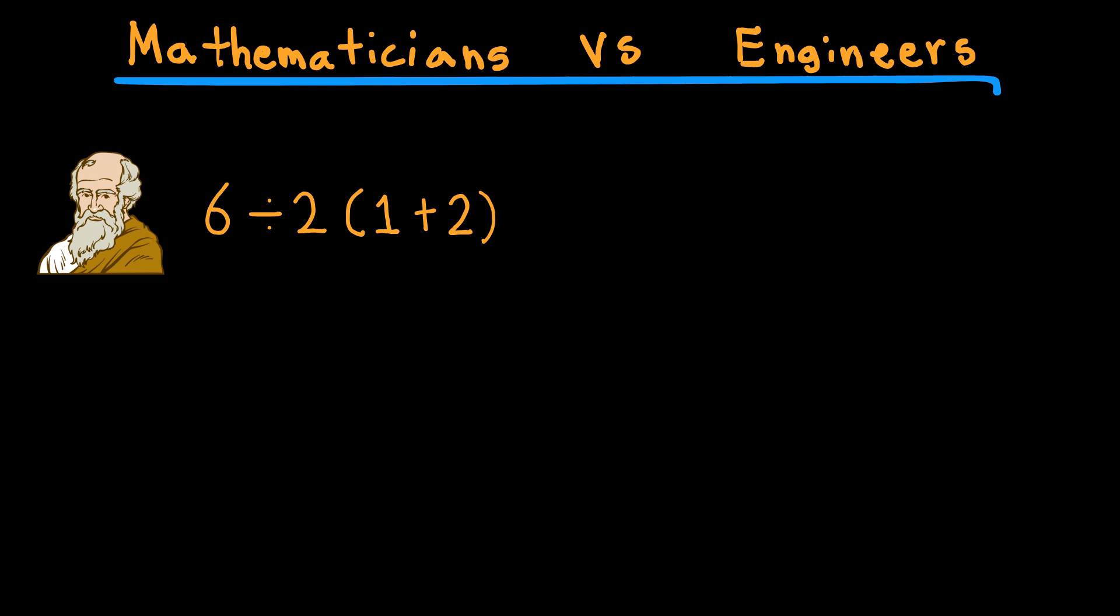Mathematicians often favor clarity. If there's any ambiguity in an expression, a mathematician might say never write 6 divided 2 brackets 1 plus 2 brackets, that's poor notation. Write it as either brackets 6 divided 2 closed brackets, brackets 1 plus 2 brackets, 3 times 3 equals 9, or brackets 2 parenthesis 1 plus 2 brackets, which equals 6 divided by 6 equals 1.